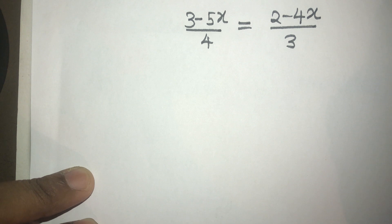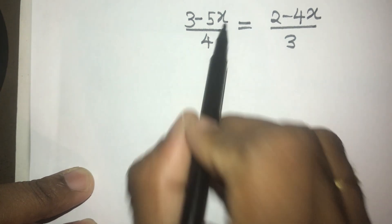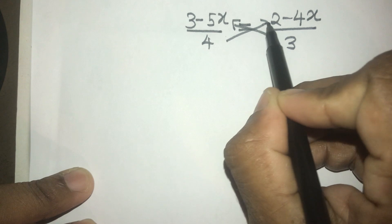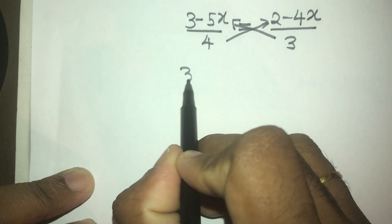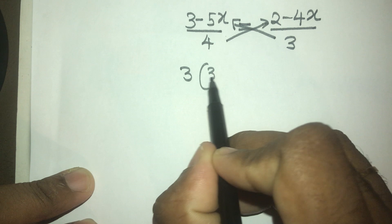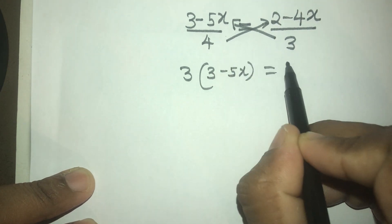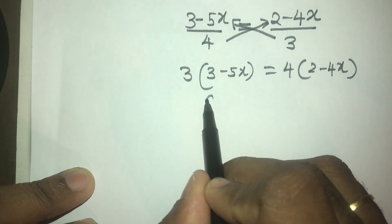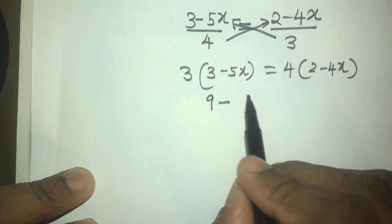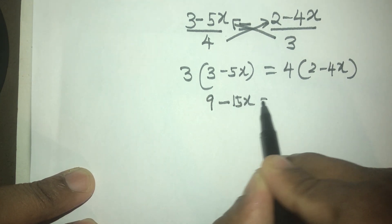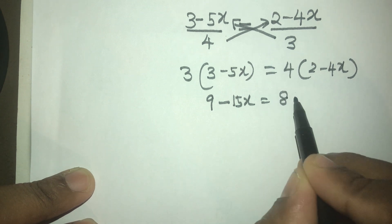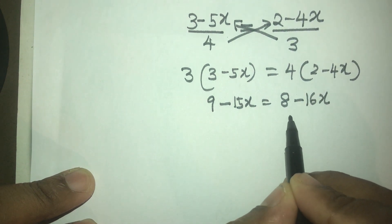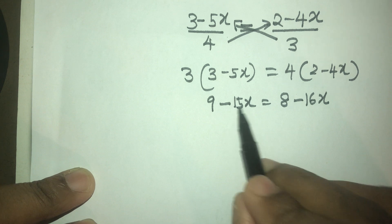In order to solve this equation, we need to multiply the left side by 3 and the right side by 4. I will show how we can multiply them using this method. Here, 4 times minus 4x, 3 into 3 is 9, 3 into minus 5x is minus 15x, 4 into 8 is 4 into minus 4x giving minus 16x. We can bring this 8 to the left side and this minus 15x to the right side.